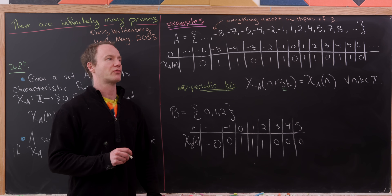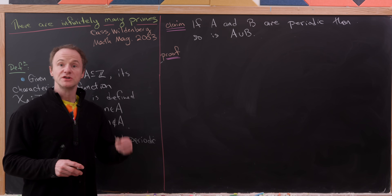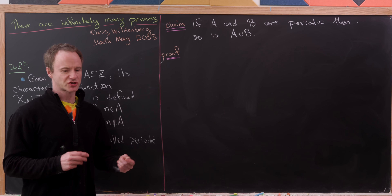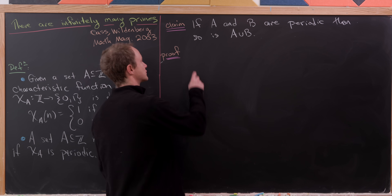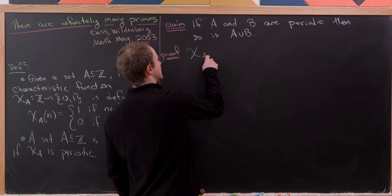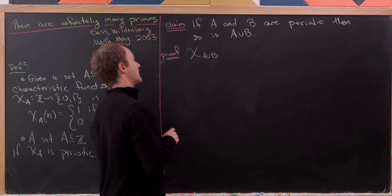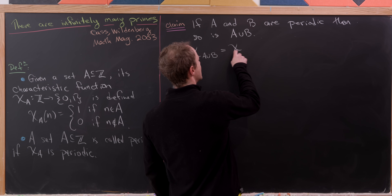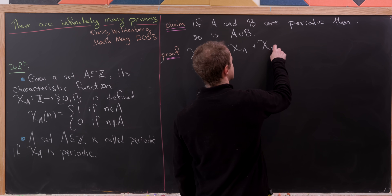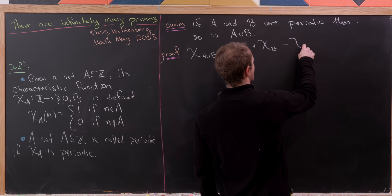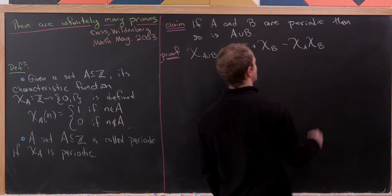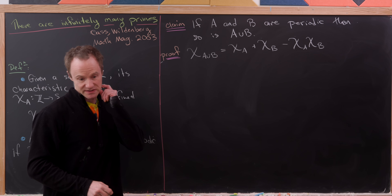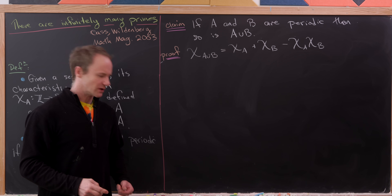Now let's prove a couple of preparatory results for our main goal. For our first result, we'll prove that if A and B are periodic, so is their union. We'll do this by constructing a formula for the characteristic function of the union. Let's break it down into cases.